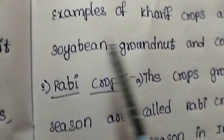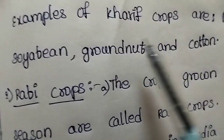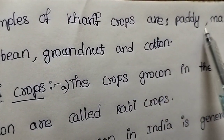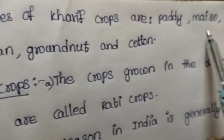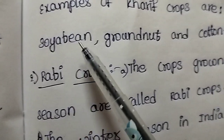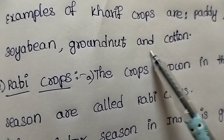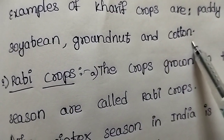Examples of Kharif crops are Paddy, Maize, Soya Bean, Groundnut, and Cotton.